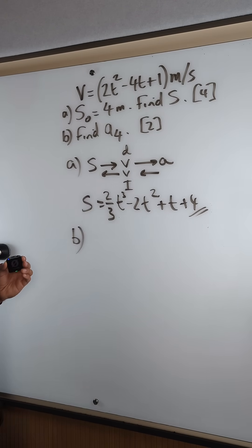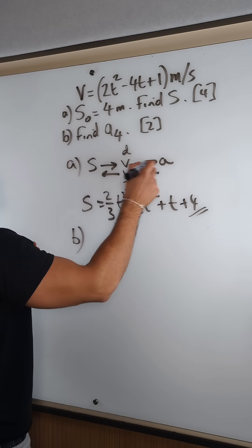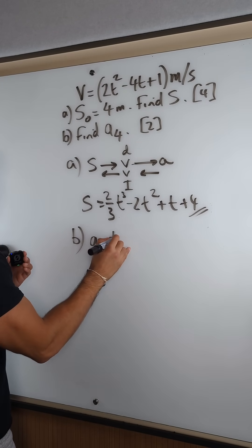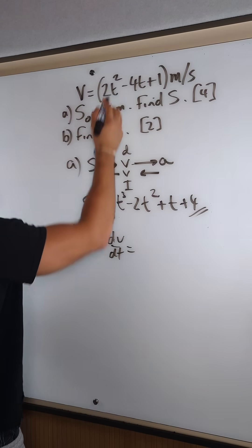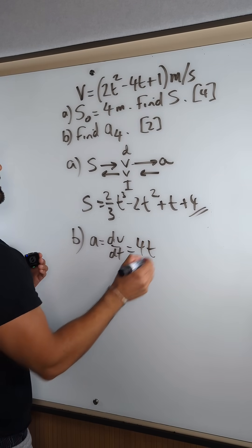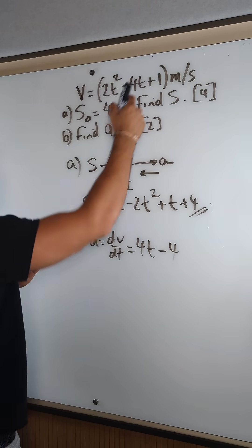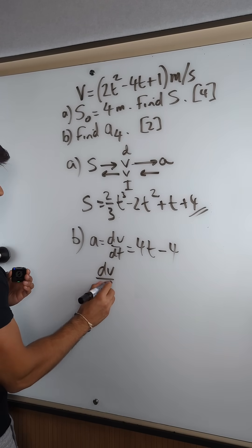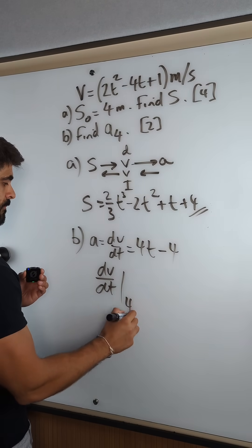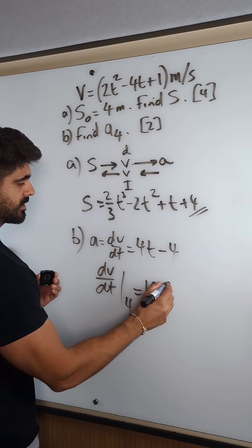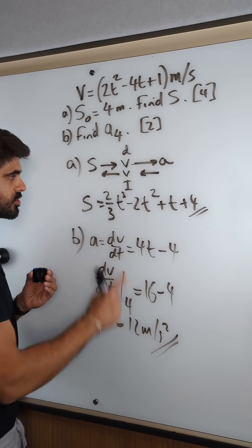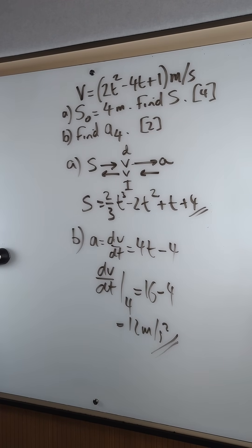Find the acceleration when t is 4. So remember to find the acceleration from velocity we differentiate. So a is dv by dt. Bring down the power, 4. Knock one off the power. And then minus 4t just becomes minus 4. And that constant of 1 just disappears. Now when we sub in, what did they want, t equals 4? We got 4 times 4 is 16 minus 4. We got 12 meters per second squared. And that one was 2 marks. 4, 2, easy dv.